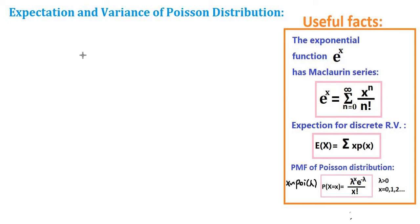Hello everybody! In this video we are going to derive the expectation and variance of the Poisson distribution. For this we're going to be needing the Maclaurin series of e to the x, the expectation formula for a discrete random variable, and the probability mass function of the Poisson distribution. Let's begin.